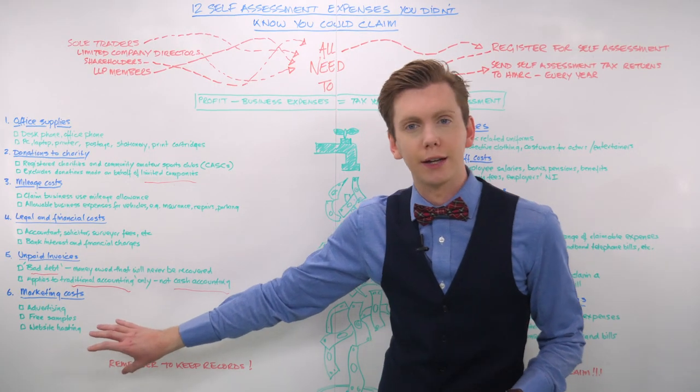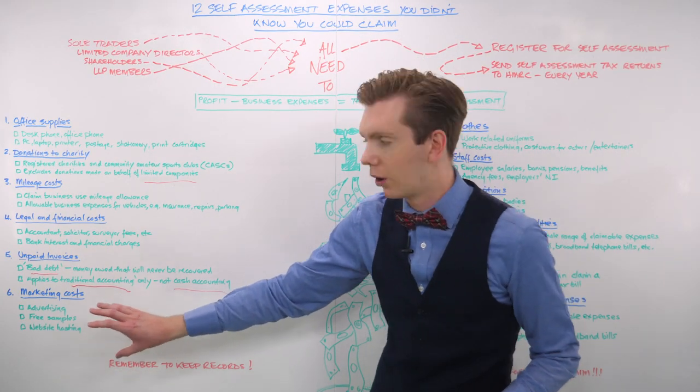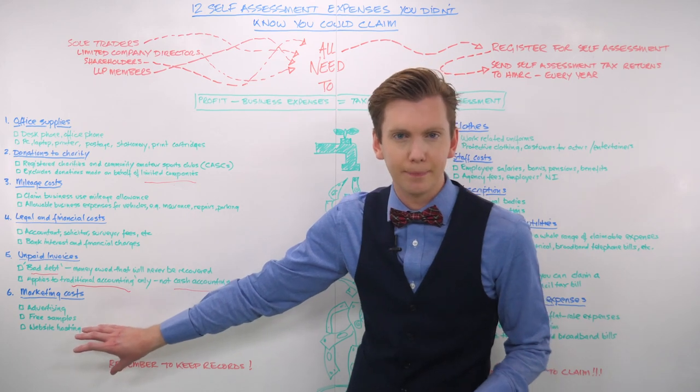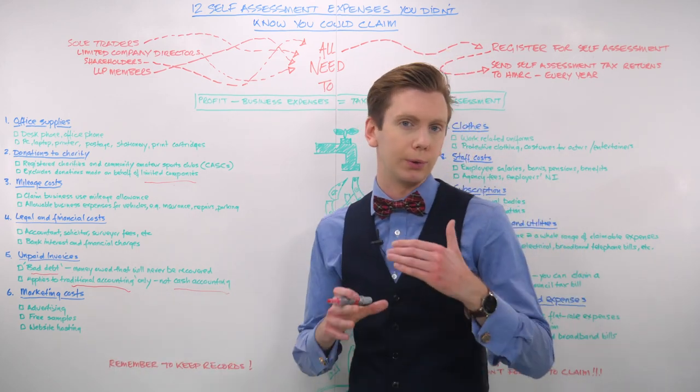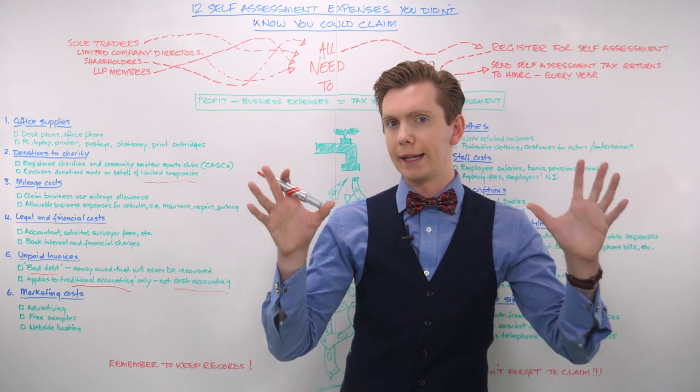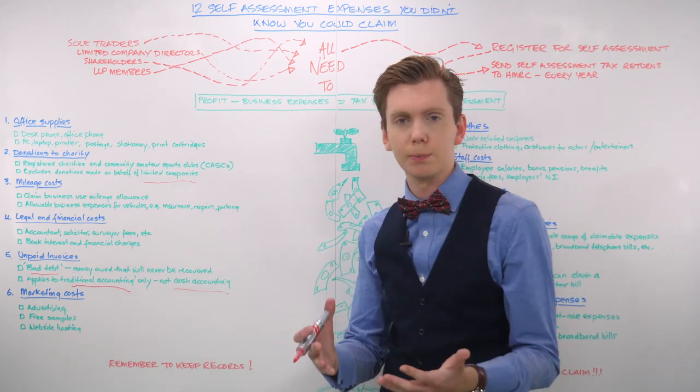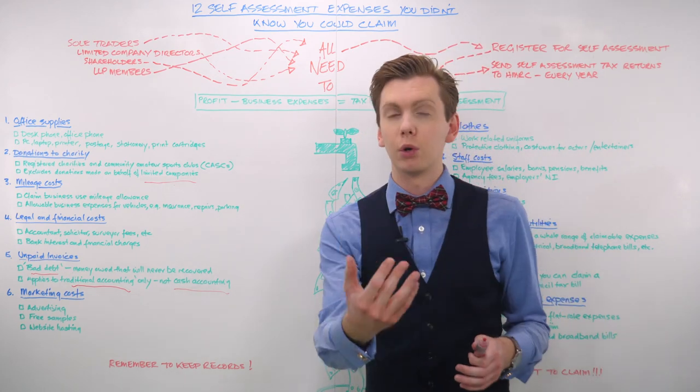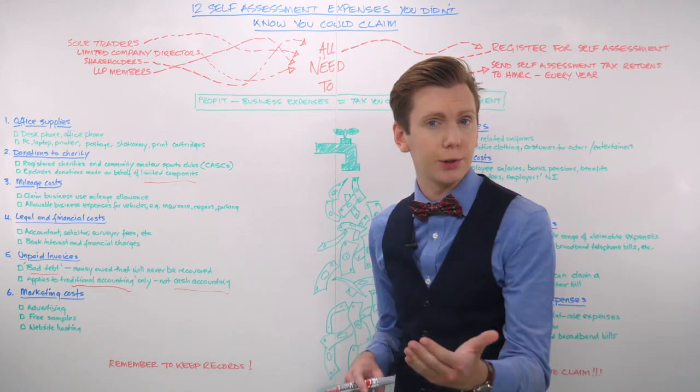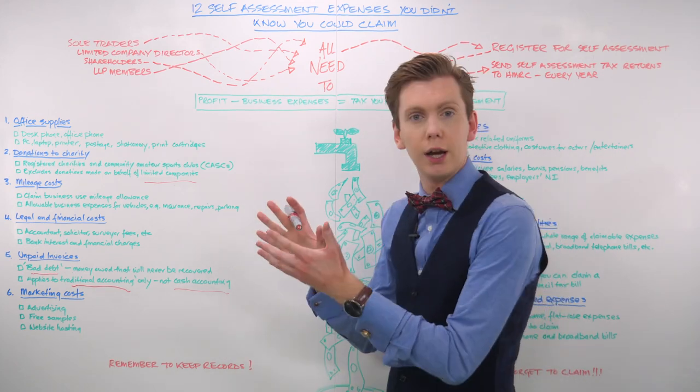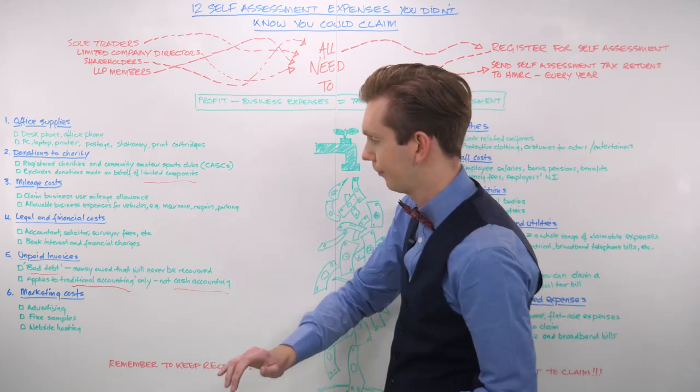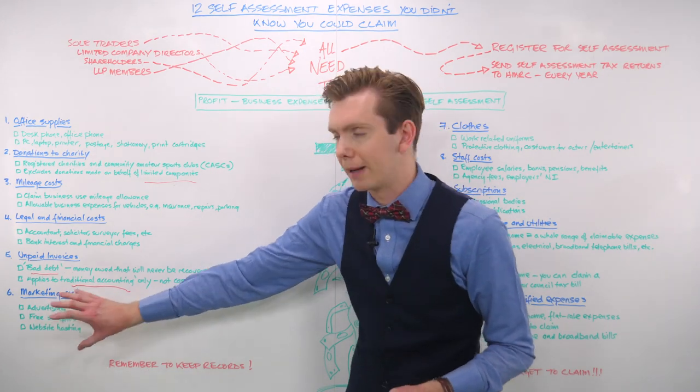The sixth one here, the cost of marketing your business. HMRC will allow you to claim business expenses for any advertising you've done in newspapers, directories, bulk mail advertising, any costs associated with free samples that you produce and distributed and of course web hosting and maintenance costs.